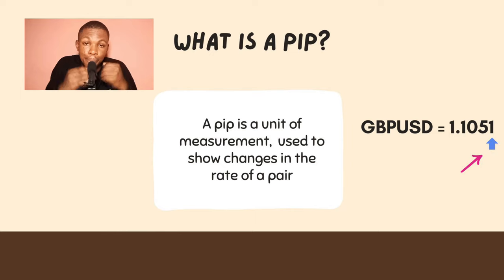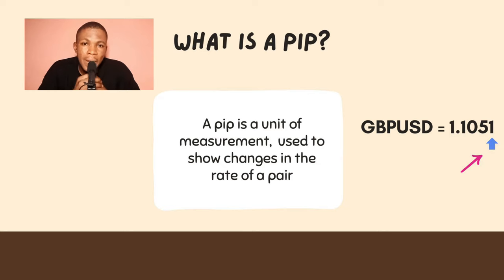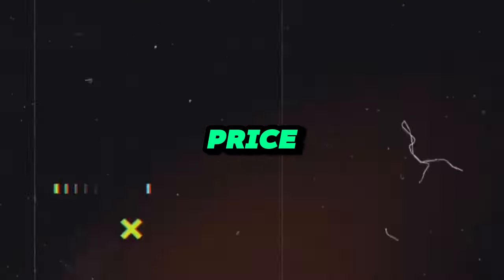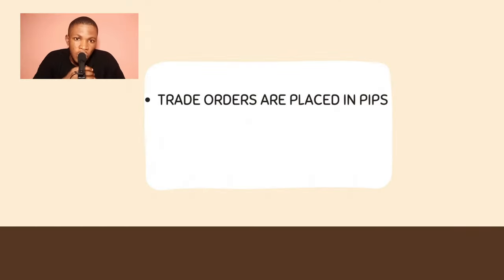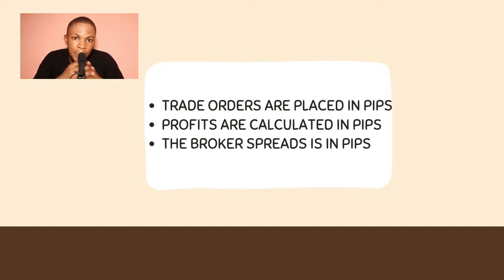Everything in forex trading is measured in pips. A pip is a unit of measurement used to show changes in the rate of a currency pair — it is the smallest amount by which a currency pair can change. Pip is an acronym for Price Interest Point. Everything we do in forex trading is about pips: trade orders are placed in pips, profits are calculated in pips, and even the broker spread is in pips.